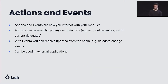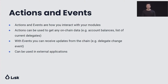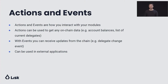So how do you communicate with your module? This happens through actions and events. Actions can be used to get any on-chain data — for example, account balances or the current list of delegates. And with events, you can receive updates from the chain — for example, a delegate change event. Both of these can also be used in external applications, which is very useful.